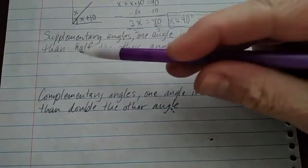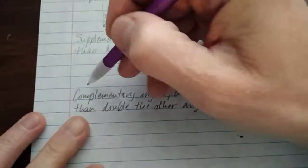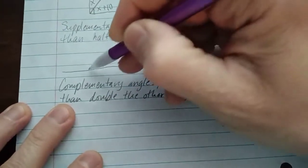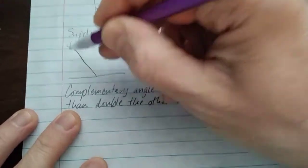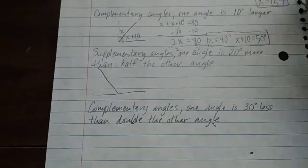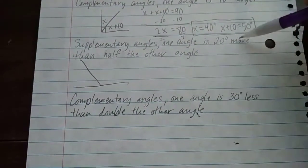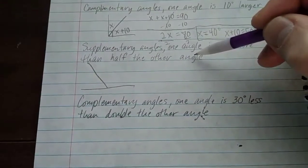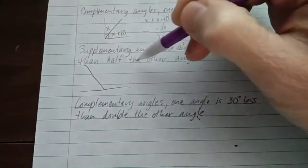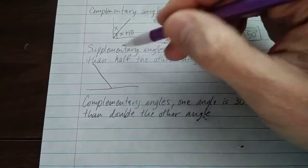One angle is 20 degrees more than half the other angle. Okay, so they're getting really tricky here. So I'm going to sketch supplementary angles. And you know that's a sketch because that is some horrible lines. One angle is 20 degrees more than half the other angle.